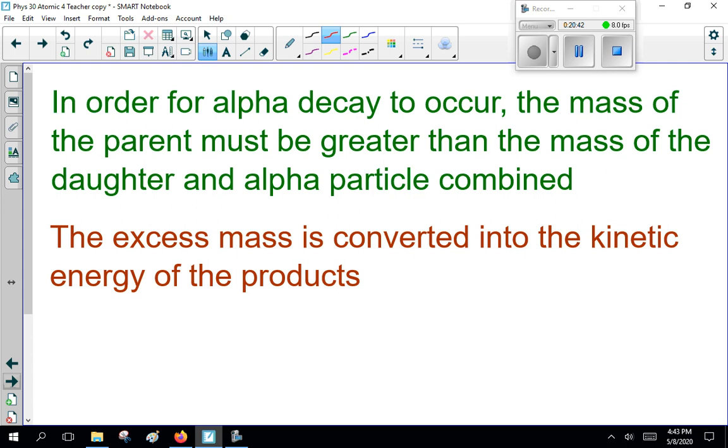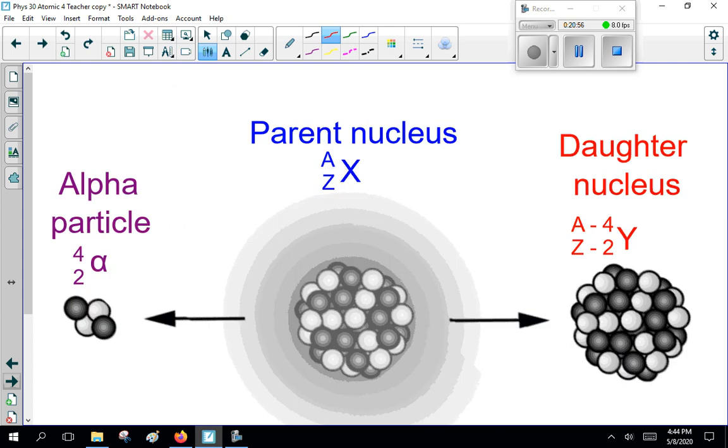Now, in order for alpha decay to occur, the mass of the parent must be greater than the mass of the daughter and alpha particle combined. The excess mass is converted into the kinetic energy of the products. What happens here? We'll get a parent nucleus, something, and it will spit off an alpha particle and the daughter nucleus. The excess mass is converted to kinetic energy. Now, I will talk about that in a later lesson, but remember it loses a little bit of mass and that's converted to energy here. That becomes important.